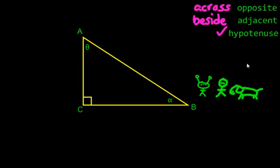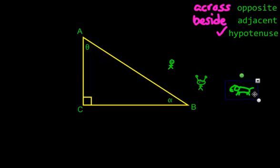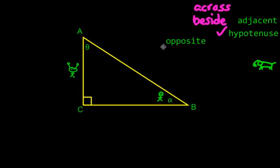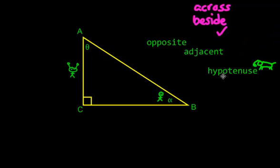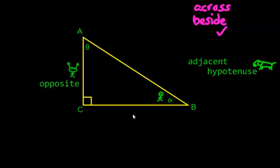To get comfortable with these words, I want you to imagine that you are standing inside this triangle. Pretend it's a big field and you're standing in there. Over here is an alien. Now, according to you, where is the alien right now? Use the words you see: opposite, adjacent, or hypotenuse. Where is the alien from where you are? Well, in this case the alien is opposite you. That is the answer I was looking for.